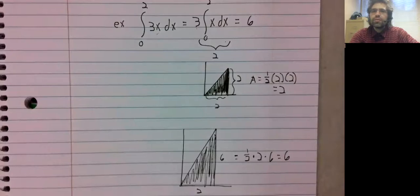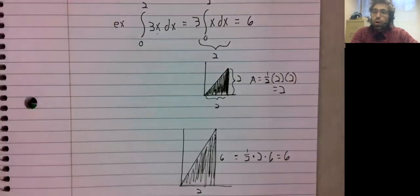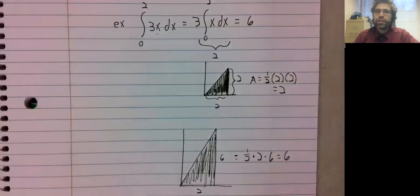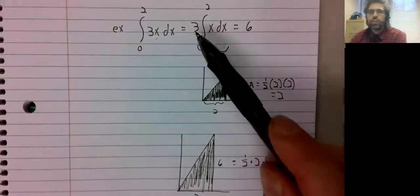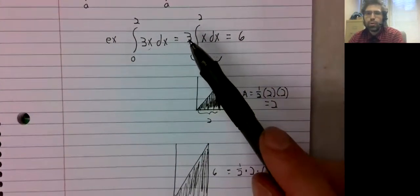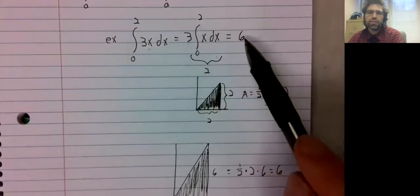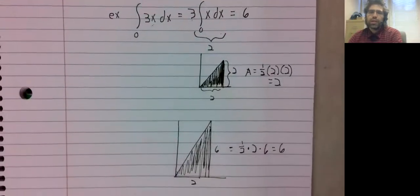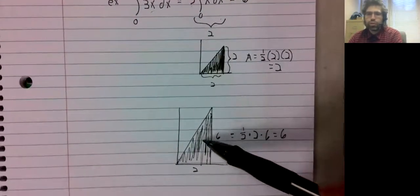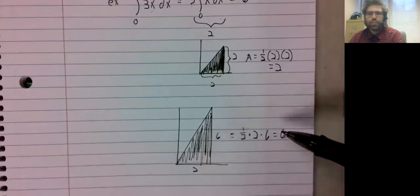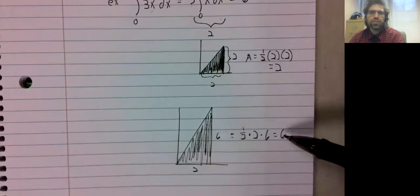So linearity worked. I mean, linearity said we could pull out, we pulled three out, we got 6 in the end, then we computed the integral one other way, we still got 6.